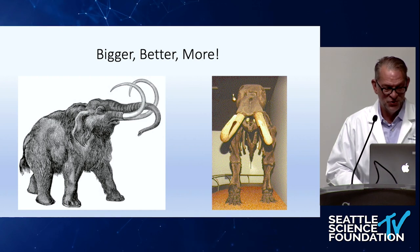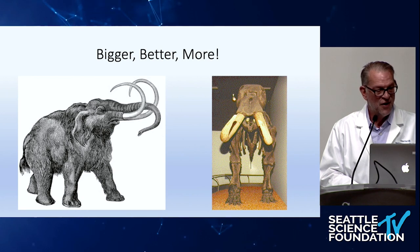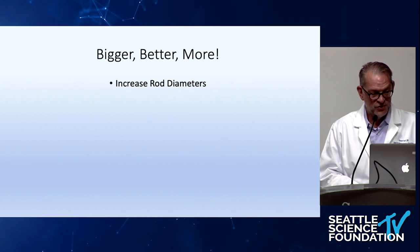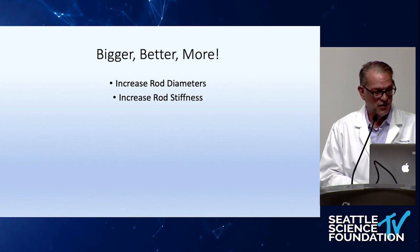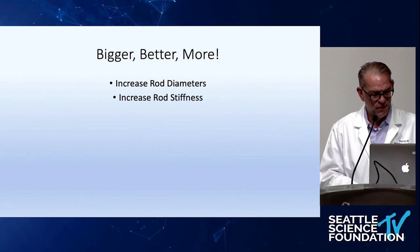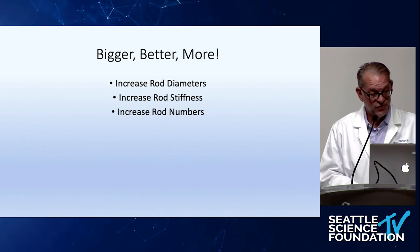Wooly mammoth — used to frequent this region, now extinct for 10,000 years. Massive, massive animal. So bigger, better, more: we can increase the rod diameter — almost all of us now are using 6.35mm rods for these reconstructions. We can increase rod stiffness; cobalt chrome rods certainly do that. There will certainly be more options coming with different alloys providing even stronger and stiffer rods. And we can increase the rod number.